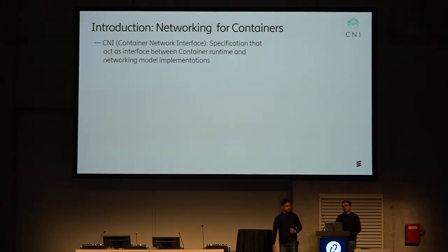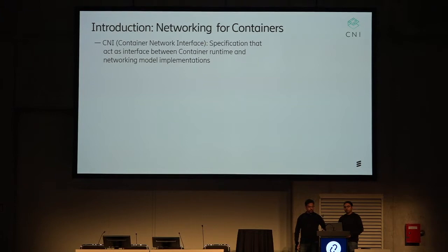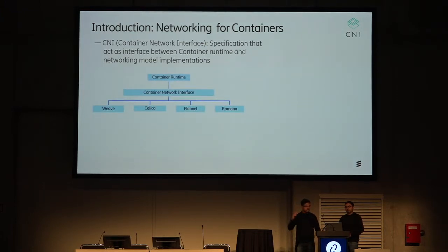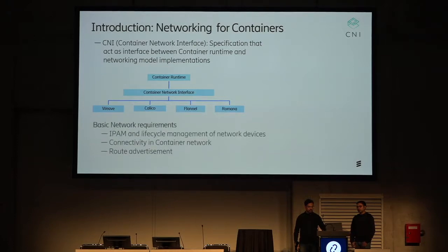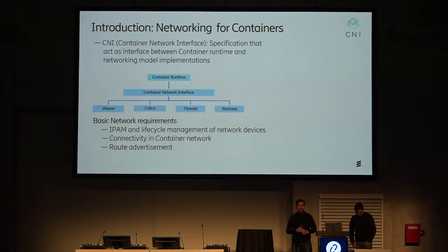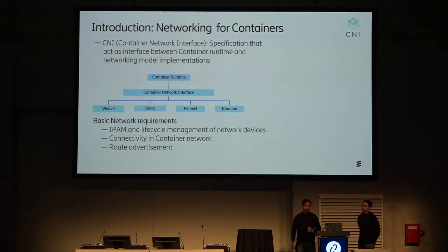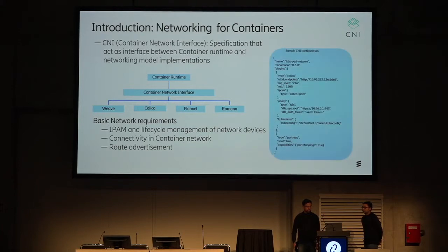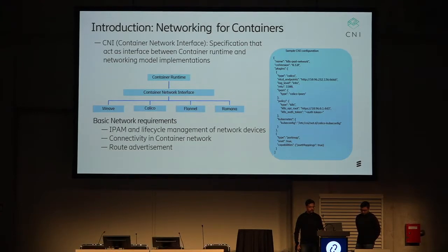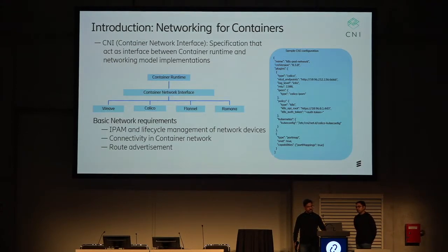To have all their implementations standardized was how the CNI came into being. The CNI specification is basically an interface between container runtime and networking model implementations. Whether it be Weave, Calico, Canal, or Romana, all have their own CNI implementations based on the specification. The basic requirements are IP address management, route advertisement, and connectivity between the container network. This is a sample CNI configuration for Calico showing backends and policies.